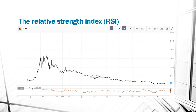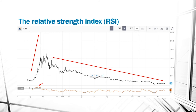Another good example is Tilray. Cannabis stocks overall had a lot of hype when they went public. Tilray started off as a stock worth around $7 and went all the way up to $300 in a matter of two months. We can see that this is a stock that was completely overbought and overvalued, and the stock has since been in a steady decline.